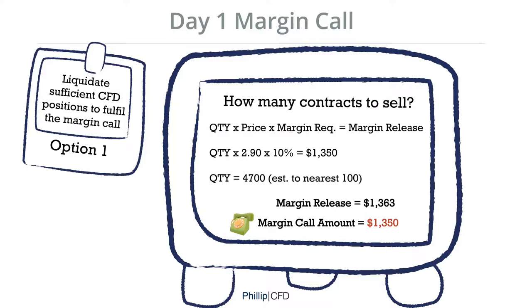From the formula: quantity × price × margin required = margin release, you will have to find the quantity, which will be approximately $4,700 estimated to the nearest $100, which is sufficient to fulfil your margin call.